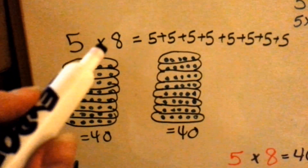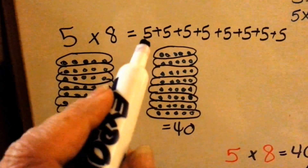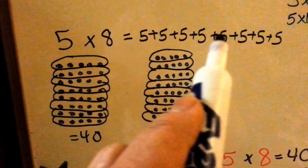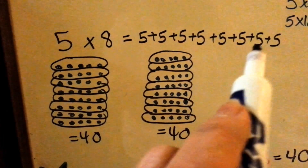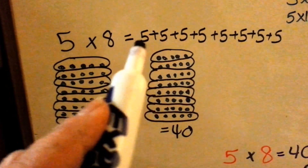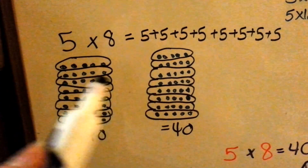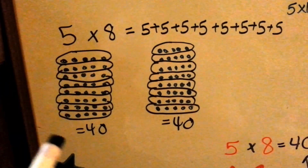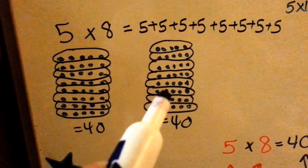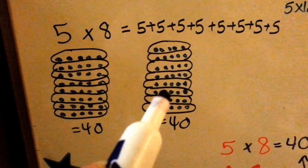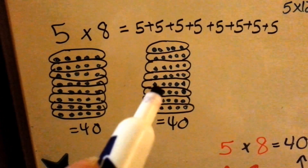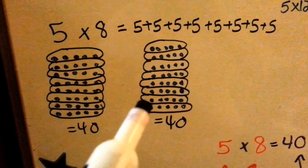5 times 8 means you have 8 fives: 1, 2, 3, 4, 5, 6, 7, 8. All these 5s added up together are the same thing as 5 times 8. 5 times 8 is 40, and 5 plus 5 plus 5 plus 5 plus 5 plus 5 plus 5 plus 5 is 40.